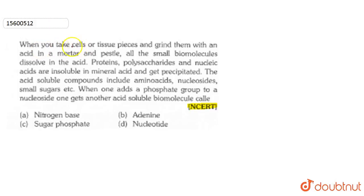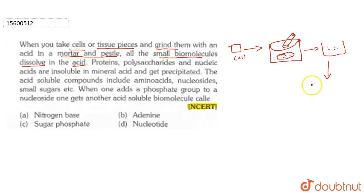Firstly, we will see that the question asks if we take tissue pieces or cells and grind them. Let's grind the tissue pieces into small pieces. What do we do with these small pieces? We add acid.